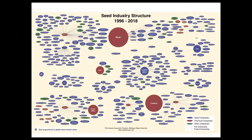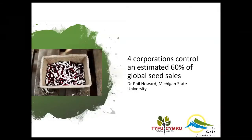This diagram, analyzed by Phil Howard, shows the concentration of power in the global seed industry. The small circles are seed companies and the lines show which larger companies own them. Very few companies own an incredible proportion of global seed companies, and the four large red circles in the middle are chemical corporations that own many smaller seed companies. From this diagram: four corporations control an estimated 60 percent of global seed sales.